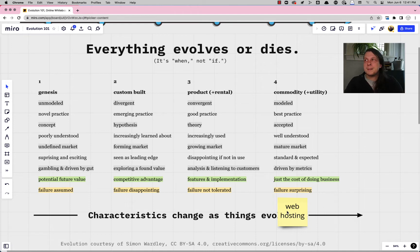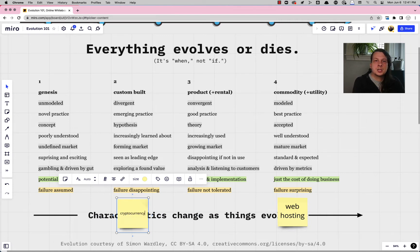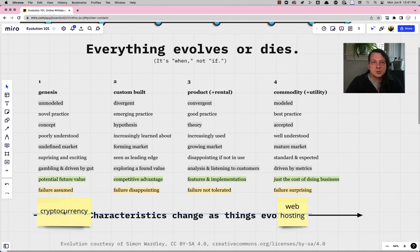So maybe next I think about cryptocurrency for example and I ask myself alright cryptocurrency where is it in the spectrum of failure? And I say was failure assumed? Is it disappointing? Is it not tolerated? Or is it surprising?